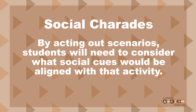Now we have Social Charades. A huge component of social emotional learning and social awareness is learning to identify and understand the social cues of others — these can be anything from body language to facial expressions, often ways in which we inform others how we're feeling and what our intentions are. You can create a list of different actions, or have your child come up with them themselves. Some examples might be waiting at a bus stop, sharpening your pencil, or listening to music. By acting out these examples and scenarios, children will need to consider what social cues would be aligned with that activity. This is a quick activity you can do with just a few minutes in your home or in a classroom.